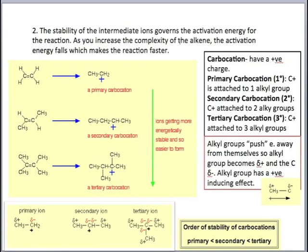The second reason is to do with the stability of the intermediate carbocation. As mentioned previously, a carbocation forms during the reaction, and the stability of this ion governs the rate of the reaction. As the complexity of the alkene increases, the activation energy falls, which makes the reaction faster. In this diagram we have a primary, a secondary, and a tertiary carbocation — as the ion gets more energetically stable, it becomes easier to form.